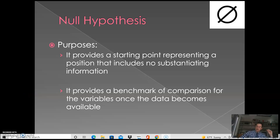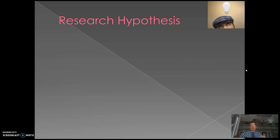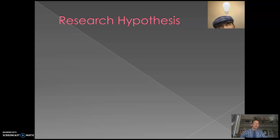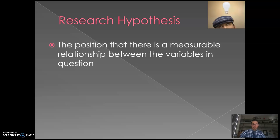As we talked about with the null hypothesis, it's essentially saying that nothing is happening — nothing to see here. What we're really looking for in our research is what's referred to as the research hypothesis, also called the alternative hypothesis. It basically means there is something observable happening — an observable or measurable relationship between X and Y.